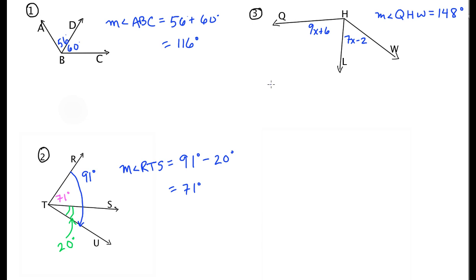So what we'll do is we'll take our angle addition postulate, which says 9x plus 6 plus 7x minus 2 is equal to the entire angle, and you solve it. We combine our like terms: 9x plus 7x is 16x, plus 6 minus 2 is positive 4. So 16x plus 4 equals 148. We'll subtract 4, 16x equals 144, and you divide. So let's see, 144 divided by 16, we'll get your final answer, that is 9.